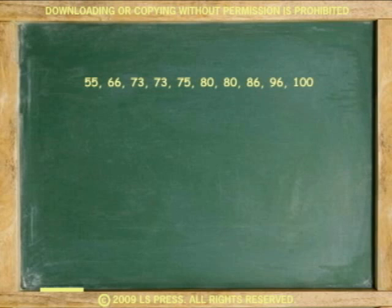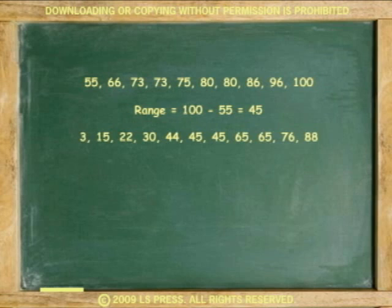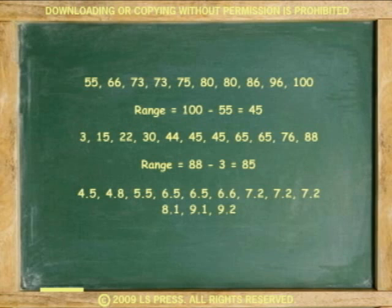For example, find the range for the following sets of data. First set, range is 100 minus 55 or 45. Second set, range is 88 minus 3 or 85. Third set, range is 9.2 minus 4.5 or 4.7.